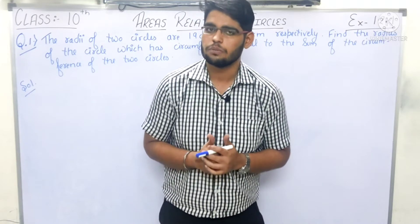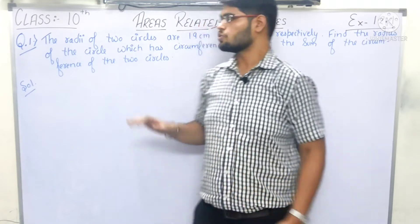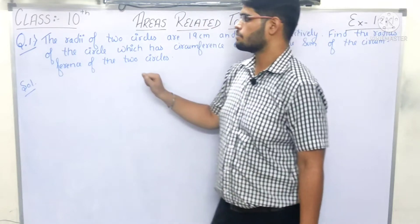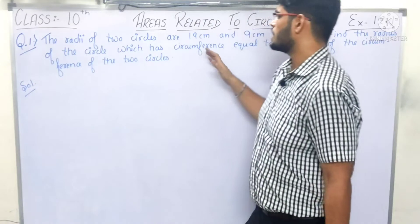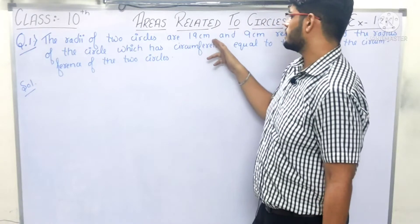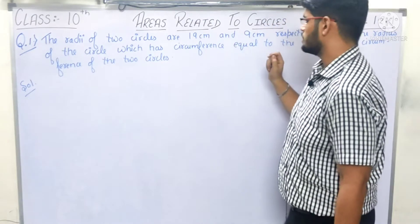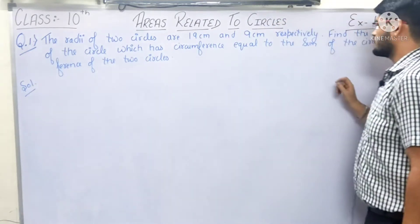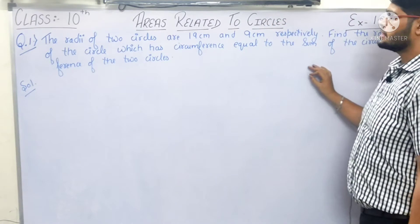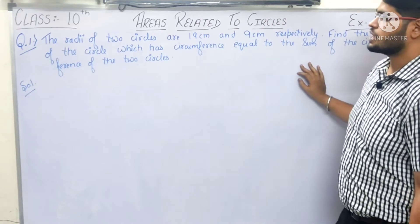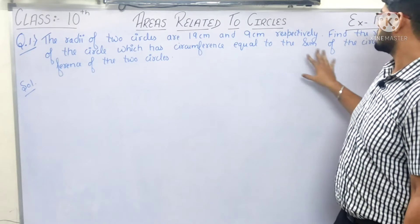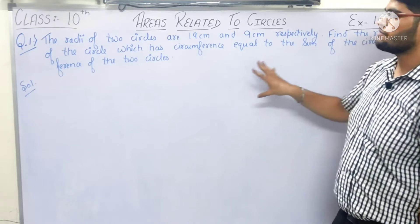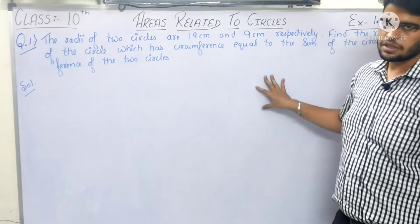Let's begin with question number 1. The radii of two circles are 19 cm and 9 cm respectively. Find the radius of the circle which has circumference equal to the sum of the circumferences of the two circles.